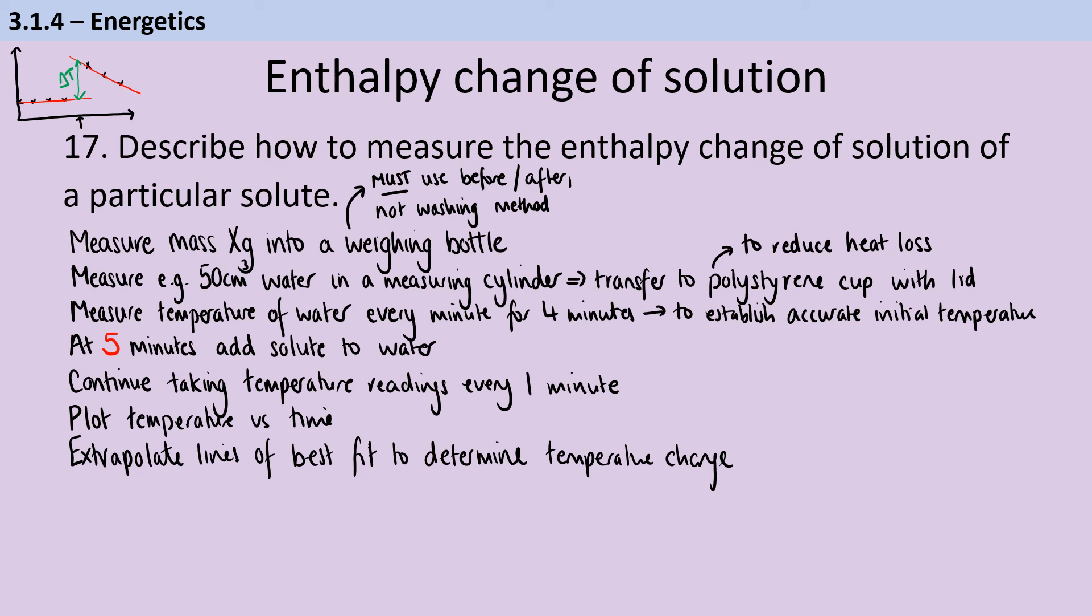The point of this is that the later points are showing us how much energy is being given to the room as that solution cools. So we can extrapolate back from that and say if we could have made the temperature reading accurately at five minutes, what would it have been?